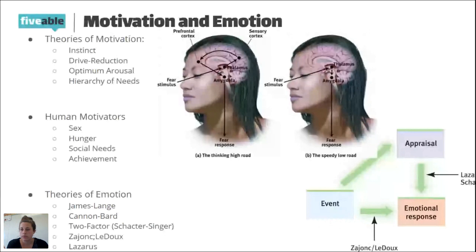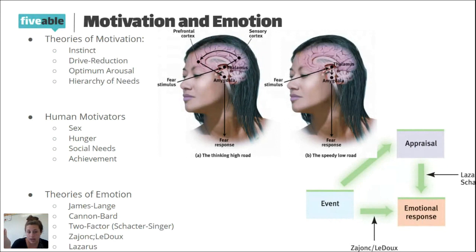One more clarification on Cannon-Bard: it's when the physiological and the emotion happen at the same time but separately. When your crush walks into the room, your heart races and you perspire — that's the physiological — and at the same time you feel the emotion of love. Both happen together. That is Cannon-Bard's theory.